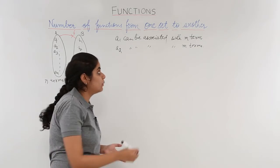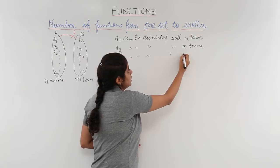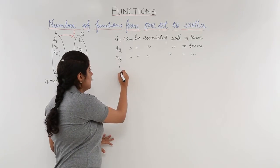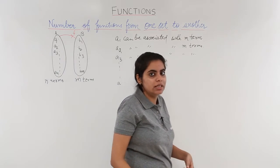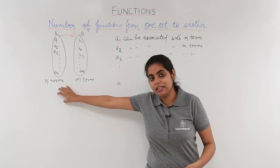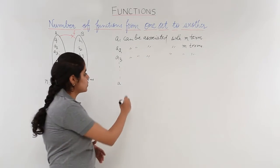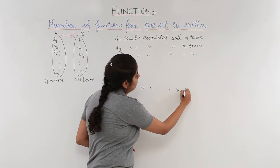You can also talk about A3 in the same manner. A3 can be associated with again M terms and so on till the last A. Which was the last A? How many terms did A have? A had N terms. So the last A was AN and AN can be associated with again M terms.